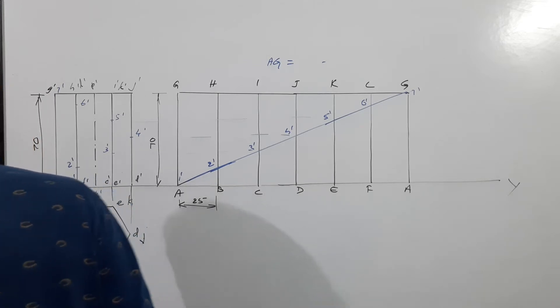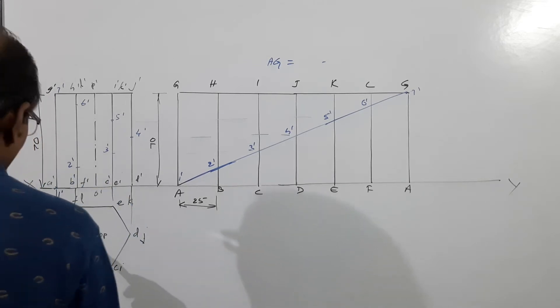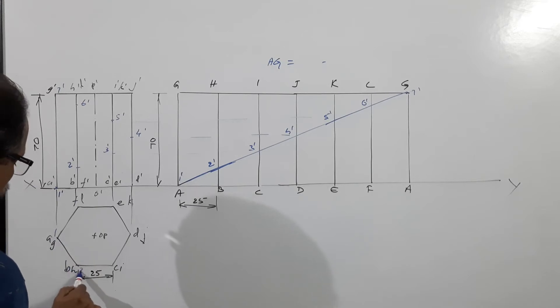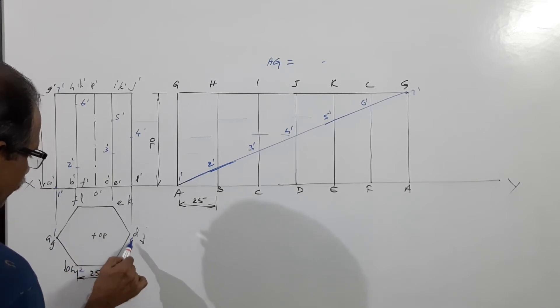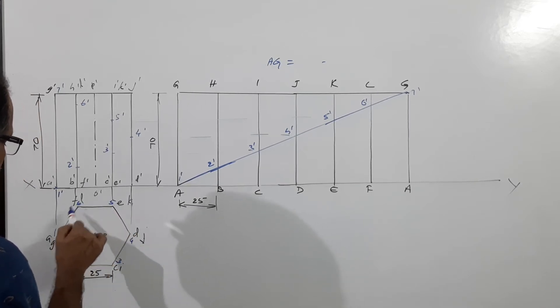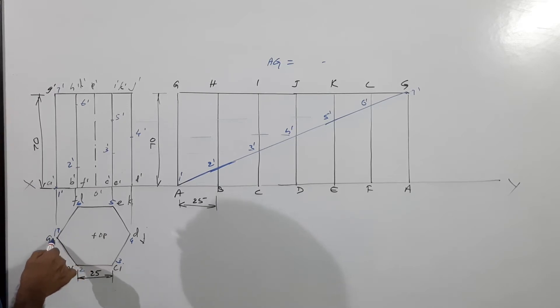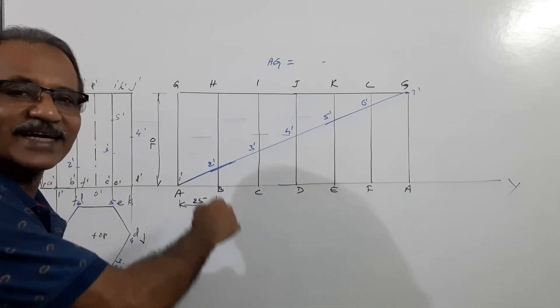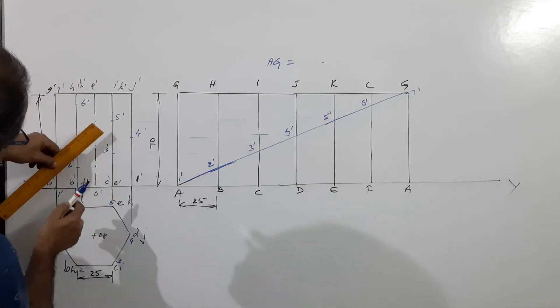Similarly four dash, five dash, six dash, and seven dash. In the plan, connect one, two, three, four, five, six, seven. One is at A and seven is at A - you need not connect them because they lay on the periphery of the hexagon itself. Here you have to connect them.